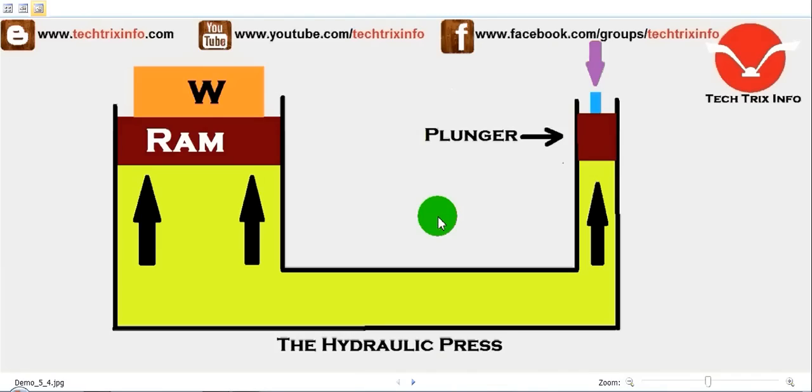A hydraulic press is a device used for lifting heavy weights by the application of a much smaller force. It is based on Pascal's law. Pascal's law states that the intensity of pressure in a static fluid is transmitted equally in all directions.